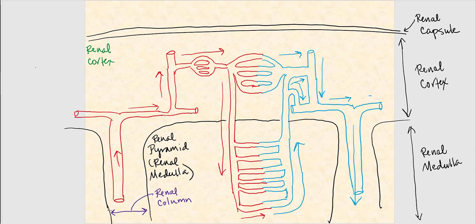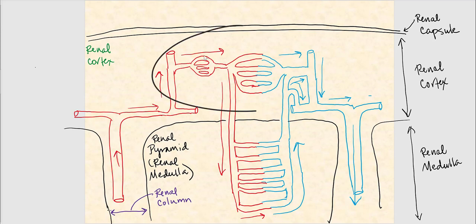Note that these veins and arteries run alongside each other — the illustration spreads them out like opening a book. As for vessel locations: the cortical radiate artery, afferent arteriole, glomerular capillary, efferent arteriole, peritubular capillaries, and cortical radiate vein are all found in the renal cortex.